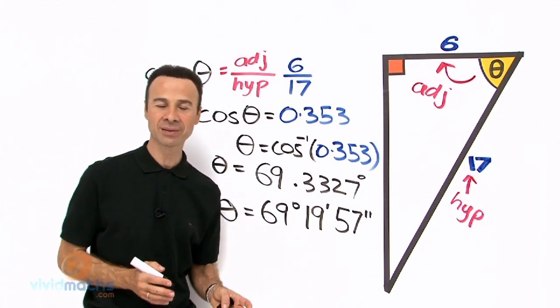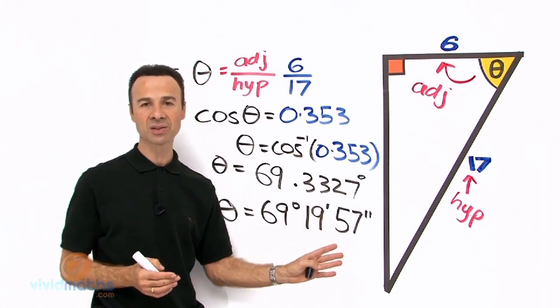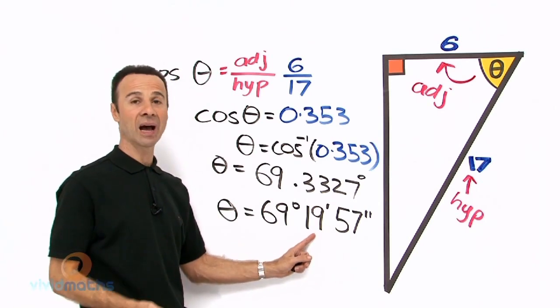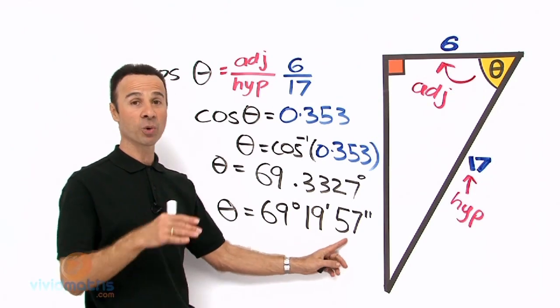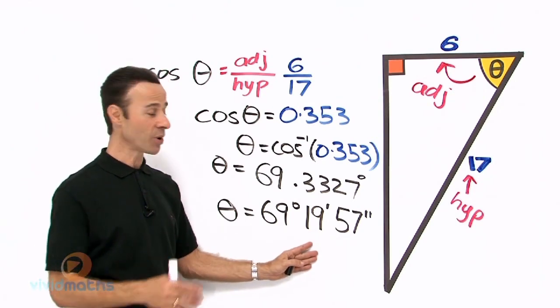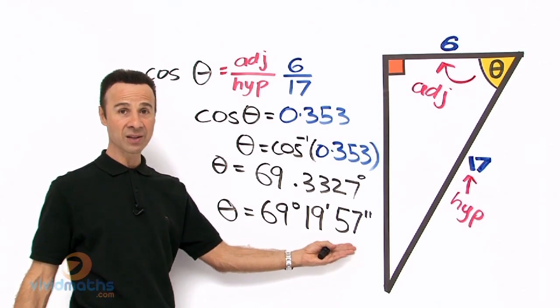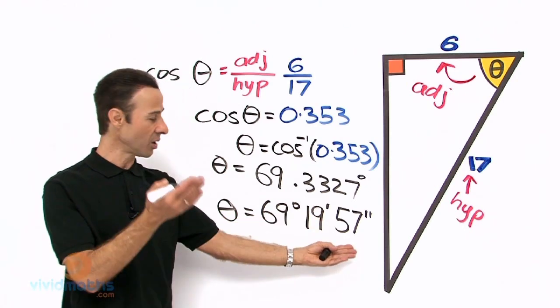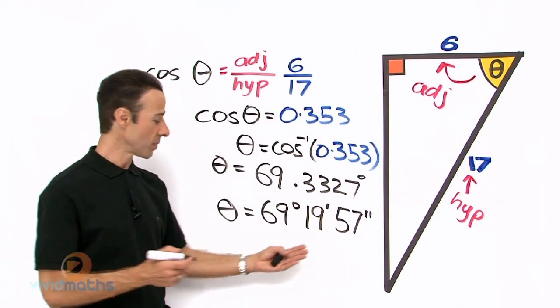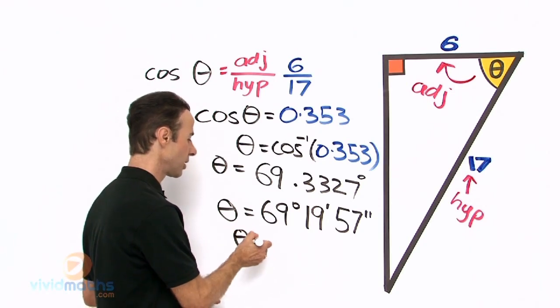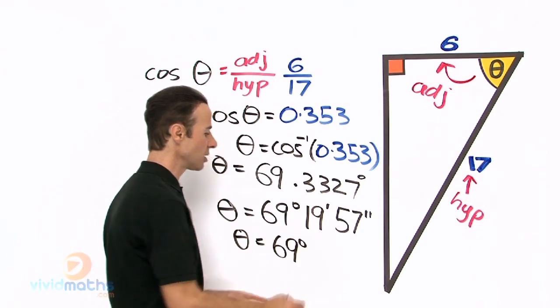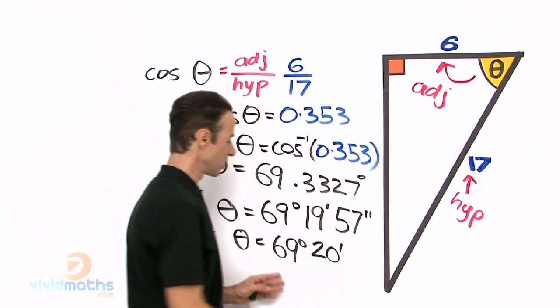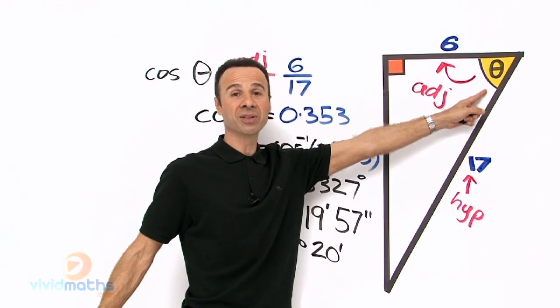This is what I was talking about earlier. Now how do we round up or round down? When we're talking about degrees, minutes, and seconds, when the seconds are above 30, we round the minutes up by 1. When below 30, we keep the minutes as they are. Now in this situation, we have seconds that are above 30—it's 57, that's way above 30. So this 19 will round up. So the angle, the missing theta, is theta equals 69 degrees, and that rounds up to 20 minutes. That's the answer, the missing pronumeral theta right over there.